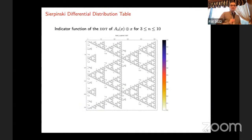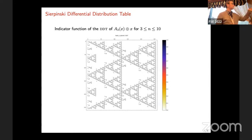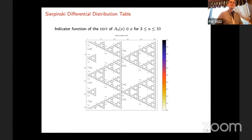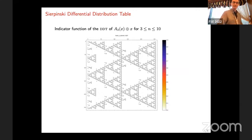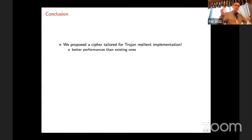Just a small glimpse at our analysis of multiplication by three, which is one of the big parts of the paper. When you look at multiplication by three and add a feed-forward with the identity, the DDT is a Sierpinski triangle — that's actually the DDT of this function. It looks nicer and nicer as you grow the size of the state, and we can actually prove it — it's also in the paper.